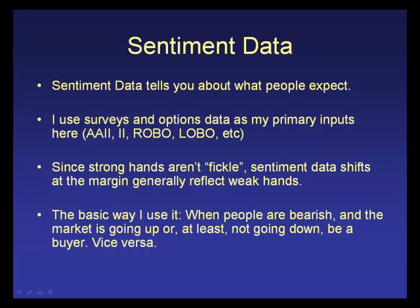I got very bullish in early September and late August because everybody was persistently bearish all summer. We got into a situation where I felt all traders were basically leaning short and all money managers were completely underexposed to the market. So if anything seemed to improve at all, you'd get the big rally — and that's exactly what we got. I also use what's called the ROBO ratio — retail-only buy-to-open options ratio — tracking whether retail traders are buying calls or puts.